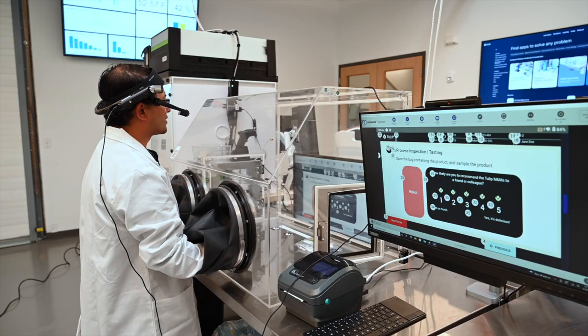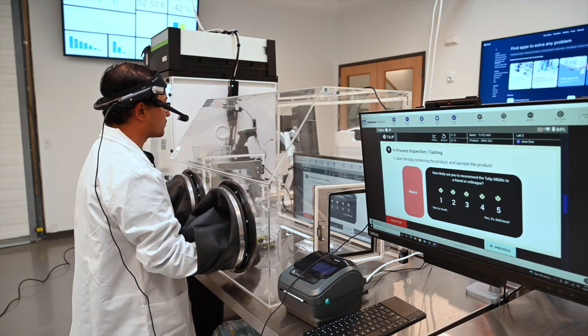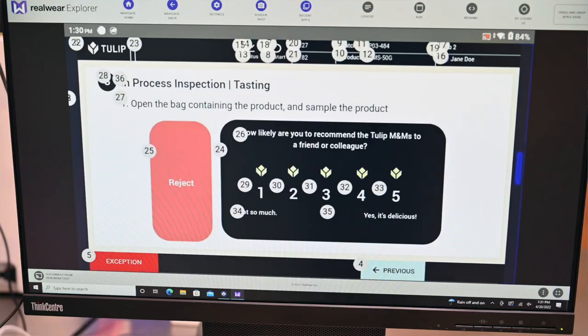Next, I need to provide some ratings on my work order here. I have ratings from one to five. I'm going to select number four. Four.